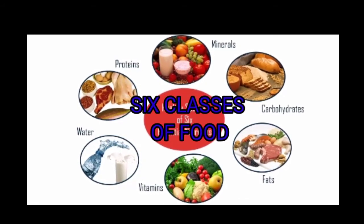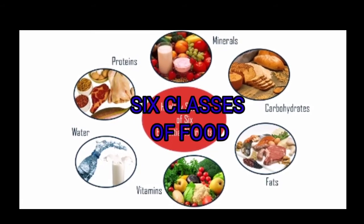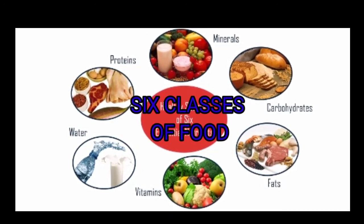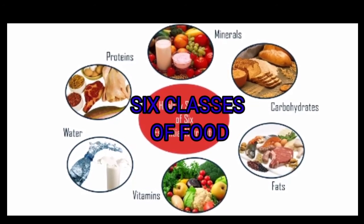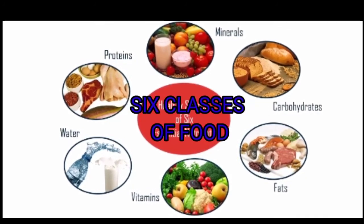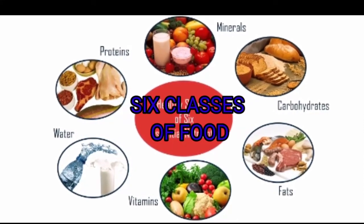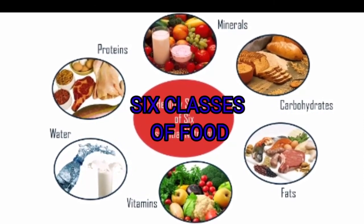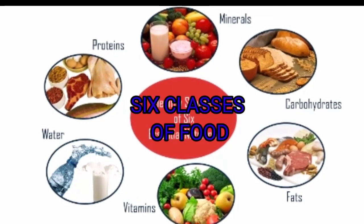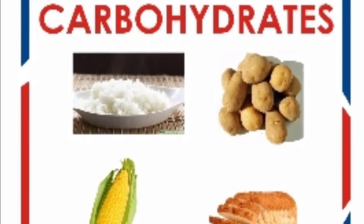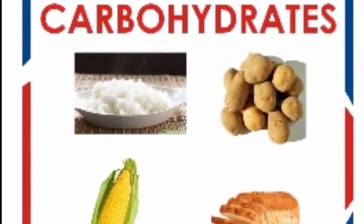There are six classes of food, and the six classes of food are: carbohydrates, protein, minerals, fats, vitamins, and water. Now let's talk about carbohydrates.